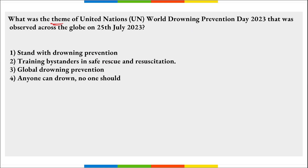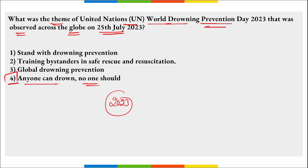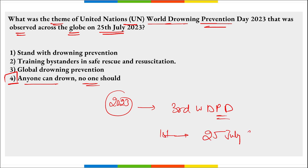What was the theme of UN World Drowning Prevention Day observed on 25th July? The theme is 'Anyone Can Drown, No One Should.' It highlights the impacts of death by drowning on families and communities and provides solutions to prevent drowning deaths. In 2023, it was the third World Drowning Prevention Day; the first ever was observed on 25th July 2021.